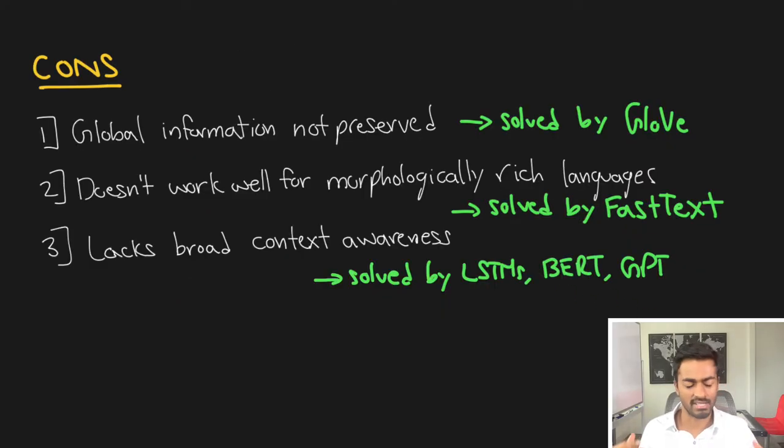That said, the Word2Vec framework does have some cons. First of all in this particular instance the global information is not accounted for. We're literally just using individual local context in order to generate the word vectors for both skip-gram and CBOW. This can be solved with global vector embeddings, GloVe embeddings, which we'll take a look at next.